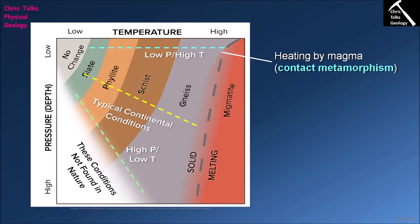Contact metamorphism can obviously occur anywhere where we have intrusions entering the crust, but arguably one of the most common locations for large amounts of intrusions forming will be either convergent or divergent plate boundaries.